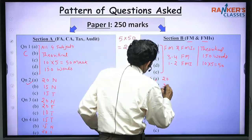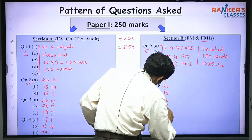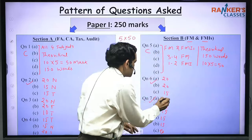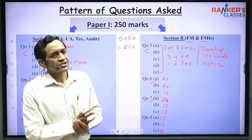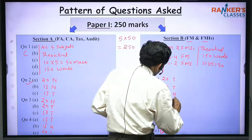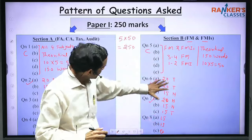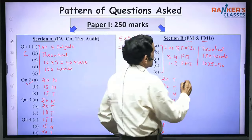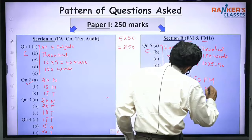The marks pattern for Section B questions is also around 20-15-15 or 15-15-20, and this marks pattern changes. Broadly it is a mix of 15, 20, and 10 marks, and the questions are a mix of theory and numerical. All questions are asked from both FM and FMI areas, but more questions are asked from FM — around 150 marks from FM and around 50 marks from FMI.